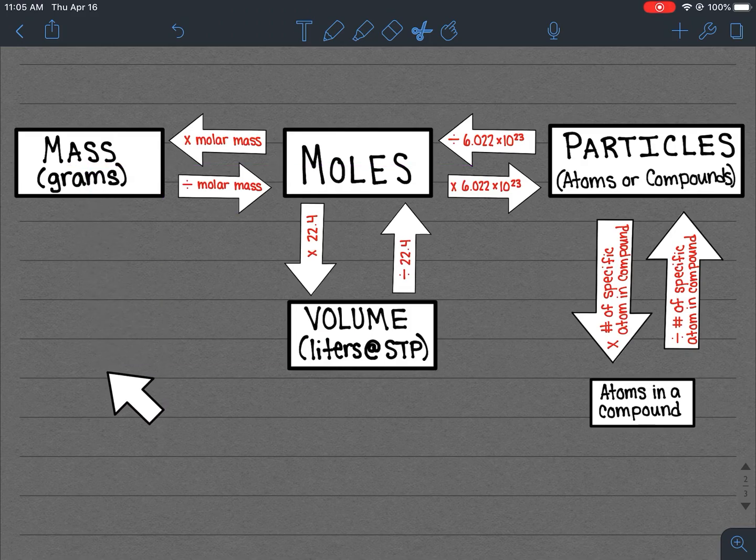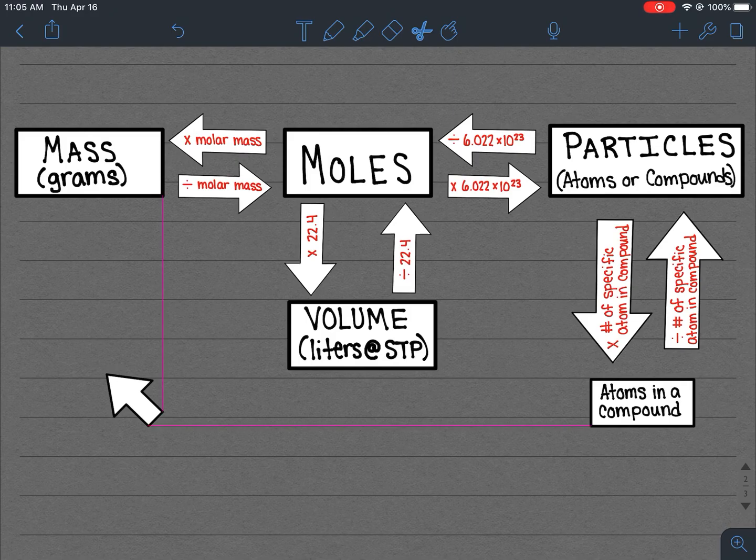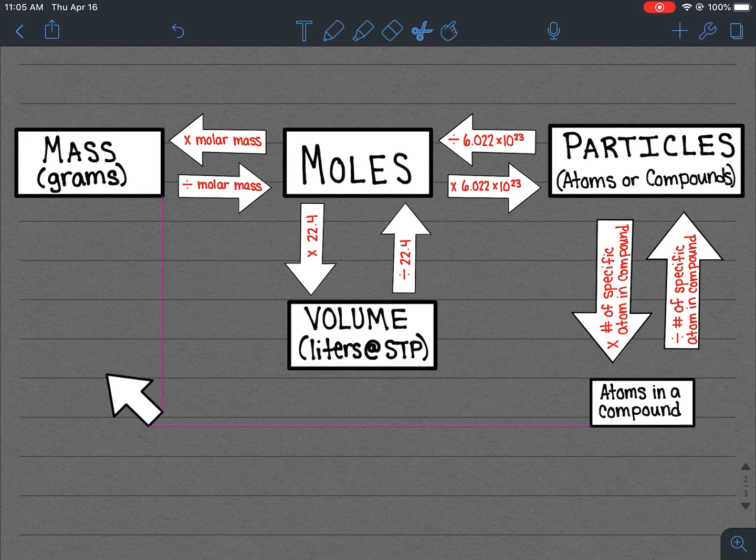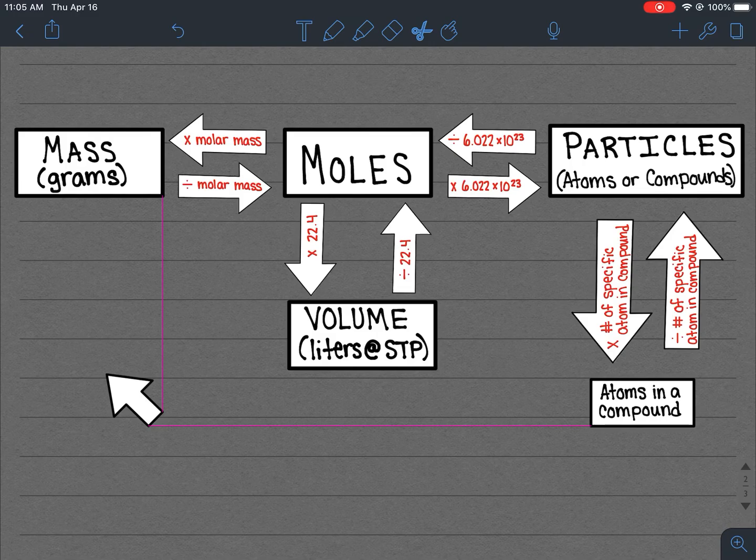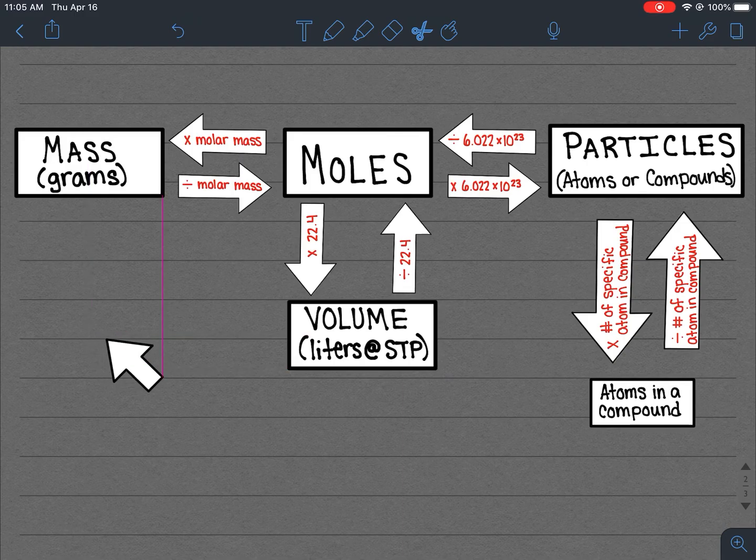One thing people were having issues with is that if it was a diatomic gas, like hydrogen is H2 or oxygen is O2, nitrogen is N2, they were forgetting that you had to actually double the molar mass. So instead of using 2.02 for hydrogen gas, they were using 1.01 and that's where they were experiencing issues, but we could go in reverse.